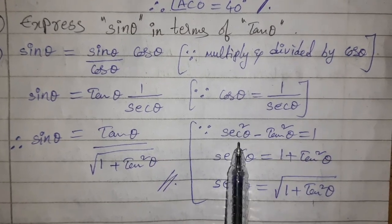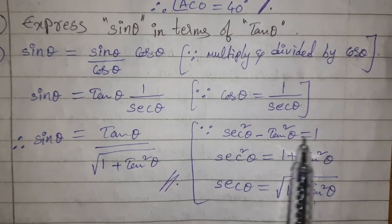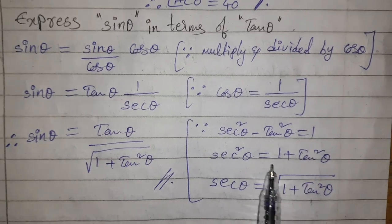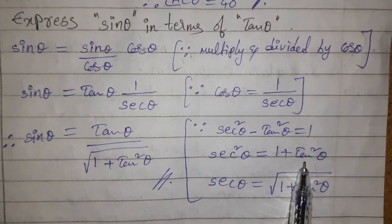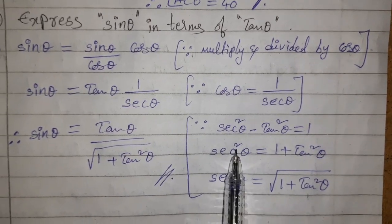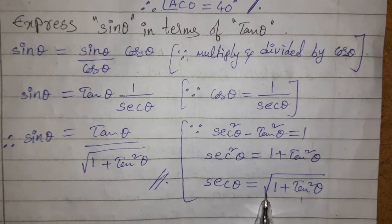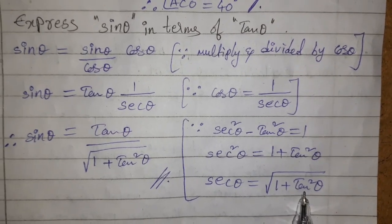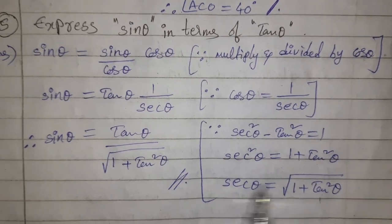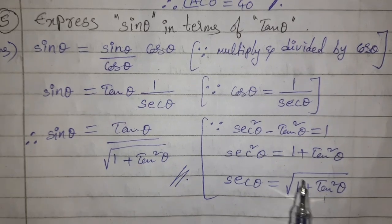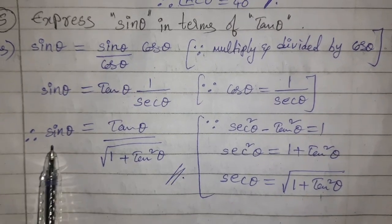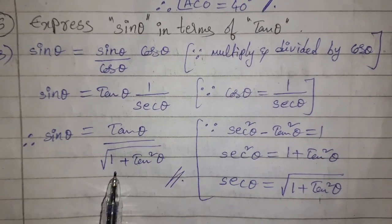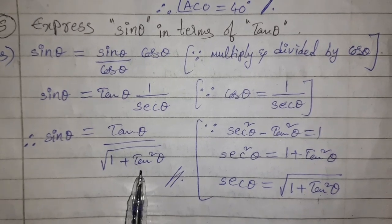Using the identity sec²θ − tan²θ = 1, we get sec θ = √(1 + tan²θ). So 1/sec θ = 1/√(1 + tan²θ). Therefore, the final answer is: sin θ = tan θ / √(1 + tan²θ).